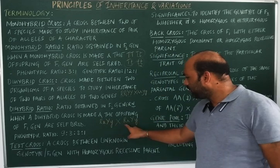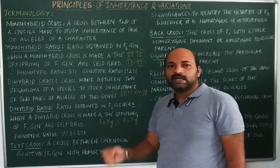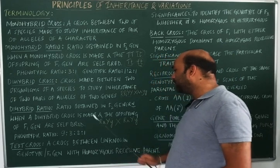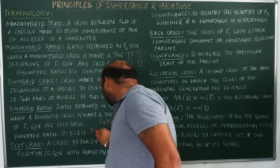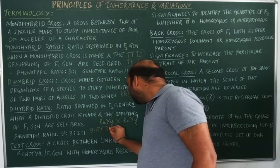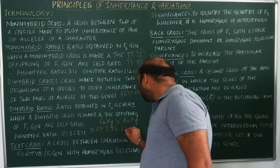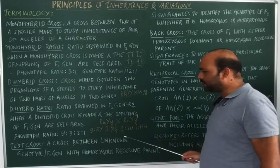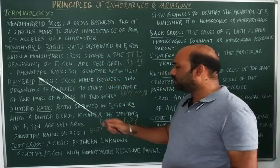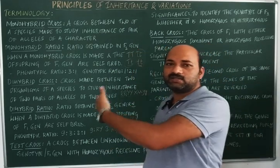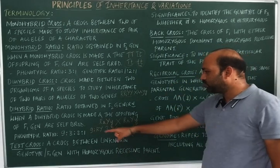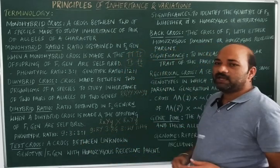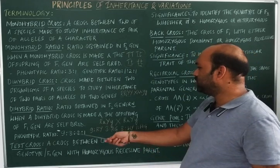When RrYy is self-bred, the F2 generation gives a phenotypic ratio of 9:3:3:1 — 9 round yellow seeds, 3 round green, 3 wrinkled yellow, and 1 wrinkled green. This ratio is obtained in both monohybrid and dihybrid crosses, which will be discussed in detail in upcoming videos on the principles of inheritance.